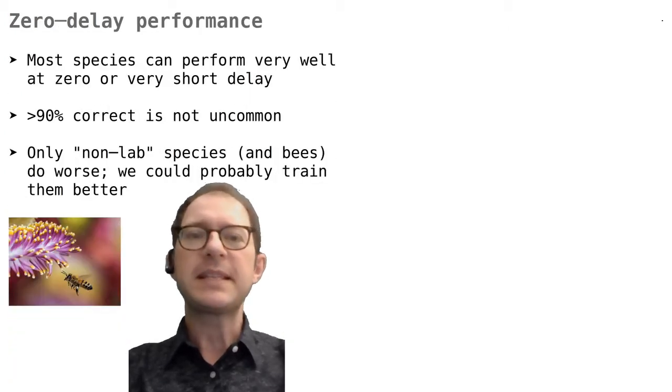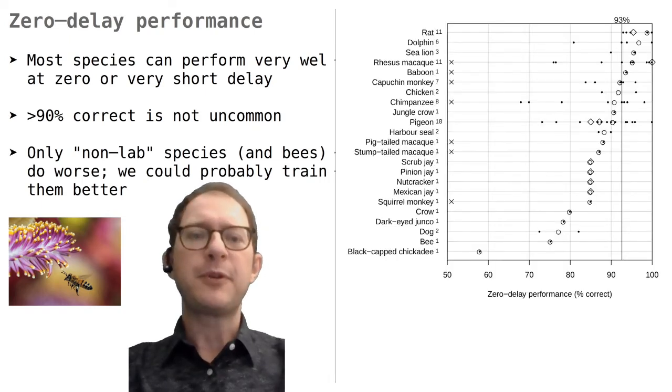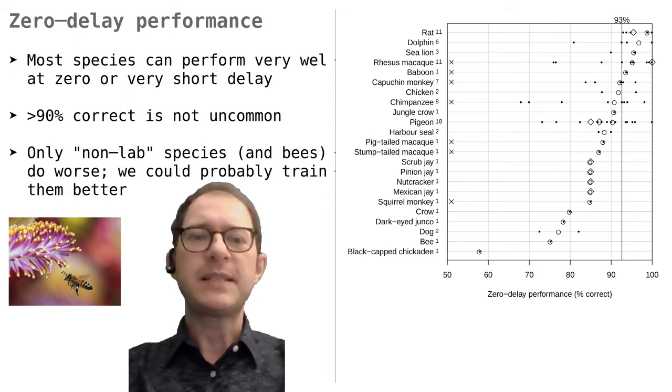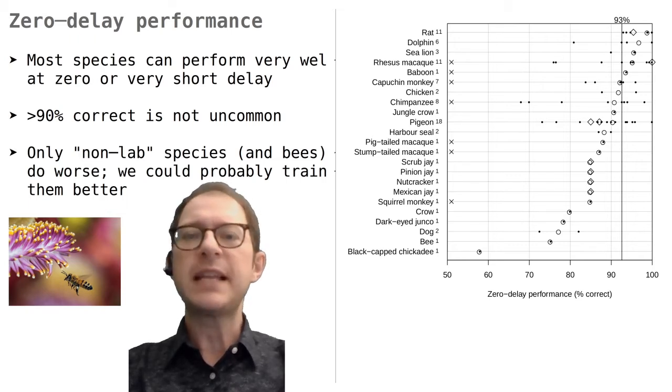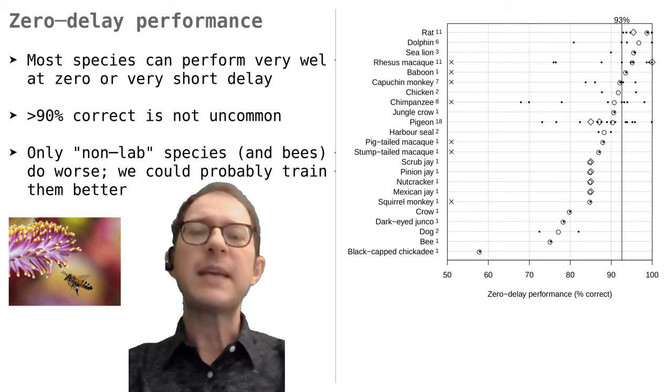Now, a great thing about the DMTS experiment is that it has been tried out with very many species. This graph is about zero delay performance. To the left, you can read the name of the species the data come from. The number refers to the number of data points for each species, that is the number of experiments. Each dot is the performance observed in a particular experiment. Each circle is the median for that species. The diamonds refer to experiments that use a slightly different procedure called titration, but the difference is not important here. The 93% line is the median value across all experiments, which means that if you disregard the differences between species, animals can do zero delay match-to-sample pretty well.